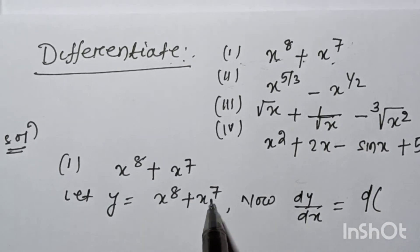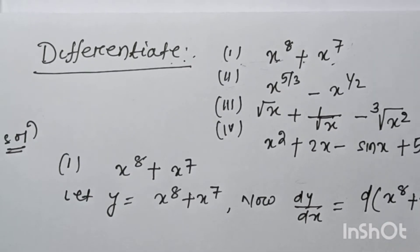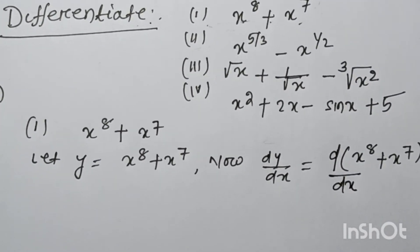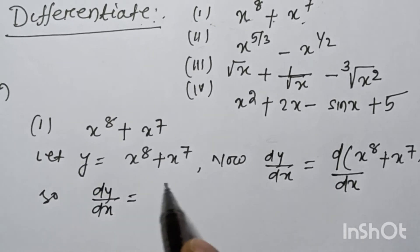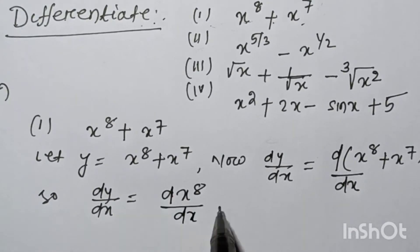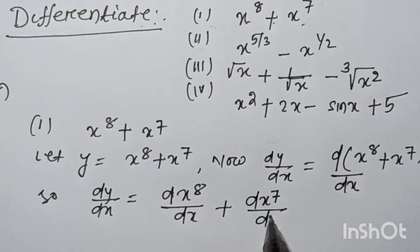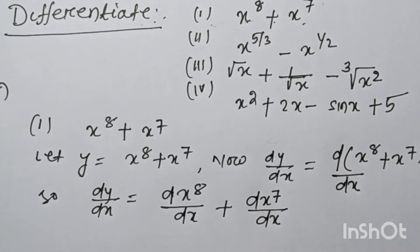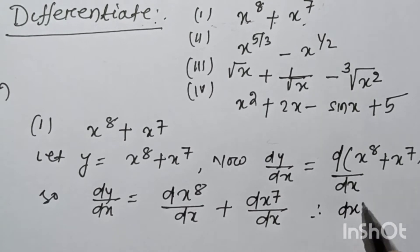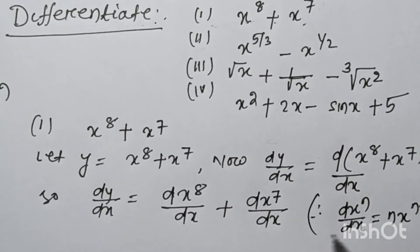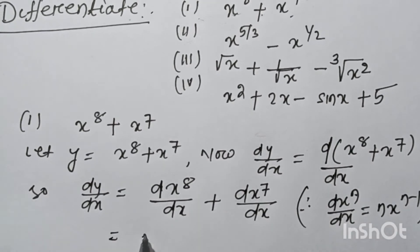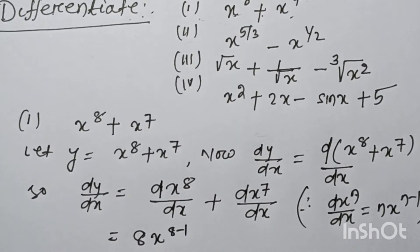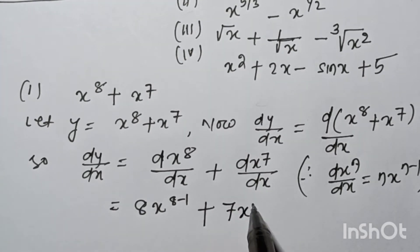So dy/dx equals d(x⁸)/dx plus d(x⁷)/dx. We know that the derivative of xⁿ by dx is equal to n into x^(n−1). So applying the formula: the power of 8 gives us 8 into x^(8−1), plus 7 into x^(7−1), which equals 8x⁷ plus 7x⁶.